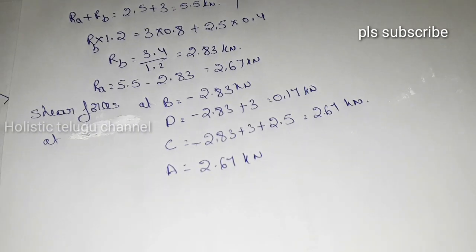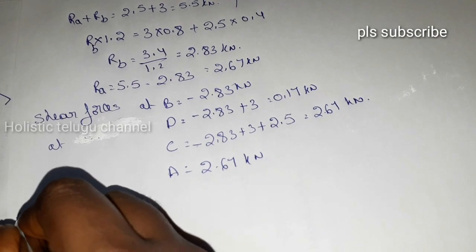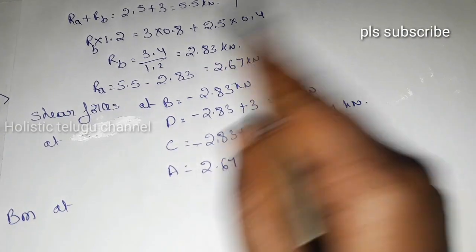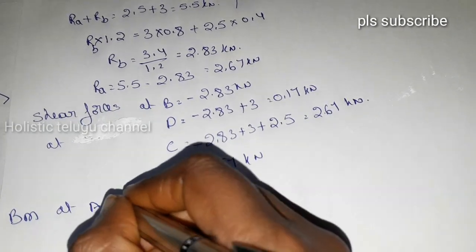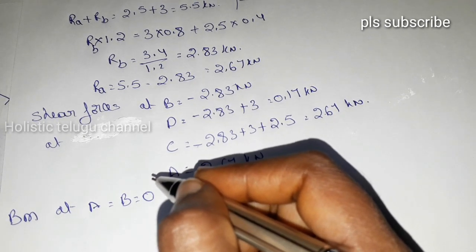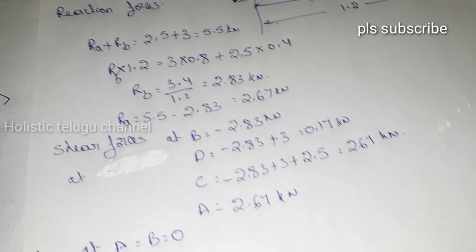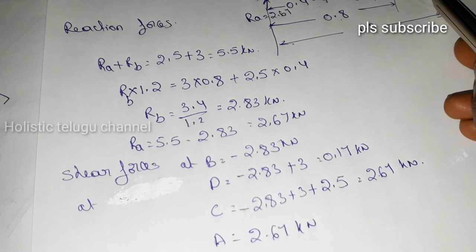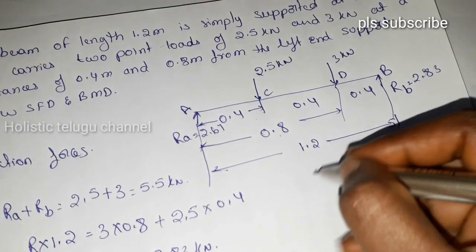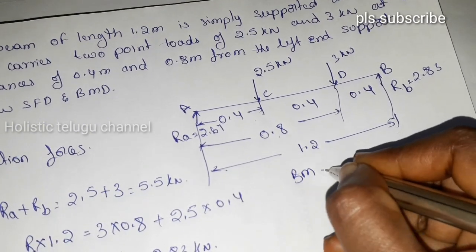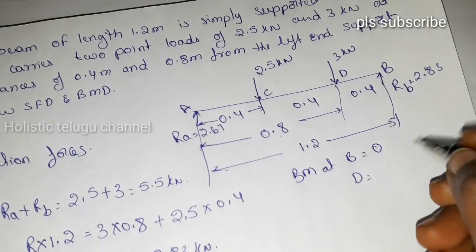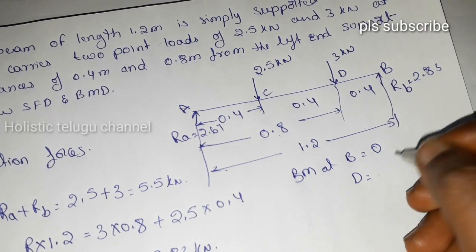Now we calculate the bending moments. Shear force and BM are computed next. At support B the BM equals 0, and at support A (point D) BM equals 0 as well.